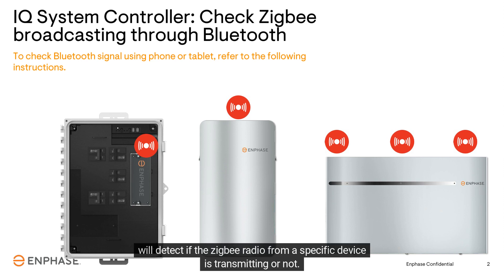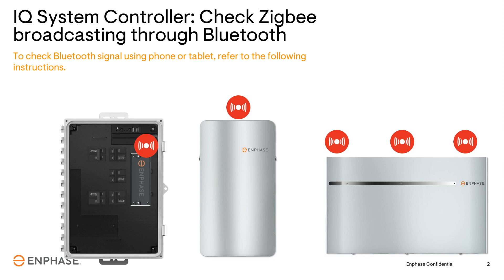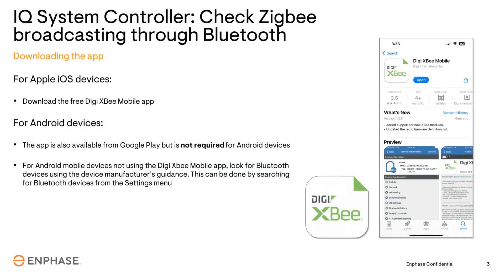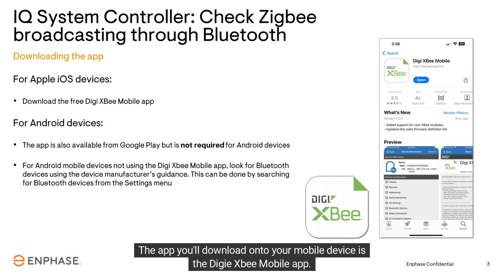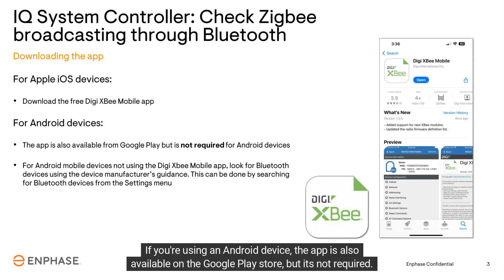If there's ever an issue with communications between these devices, there's a mobile app available that will detect if the Zigbee radio from a specific device is transmitting or not. This will be helpful in narrowing down the Zigbee communication issue. The app you'll download onto your mobile device is the DIGI XB mobile app. The app is free and will use the Bluetooth on your mobile device to detect the signal. If you're using an Android device, the app is also available on the Google Play Store.